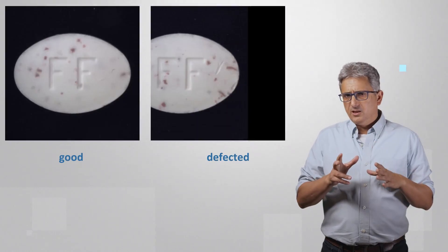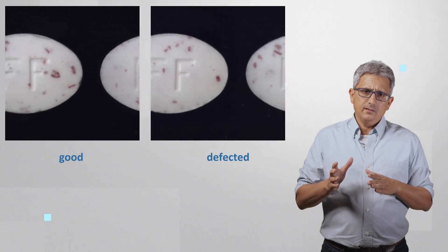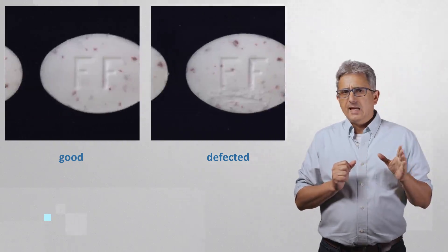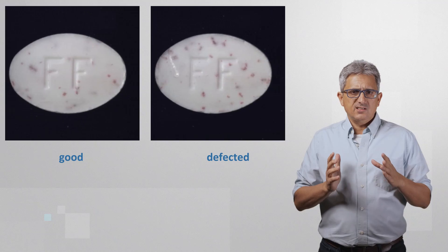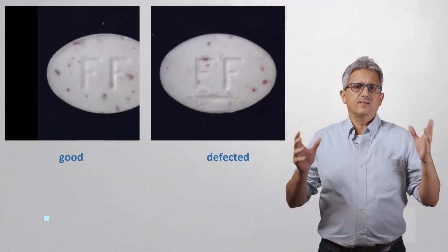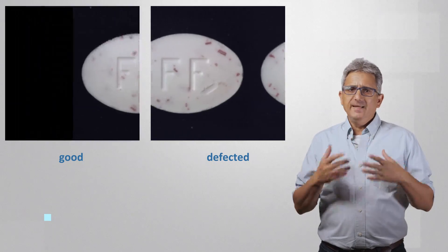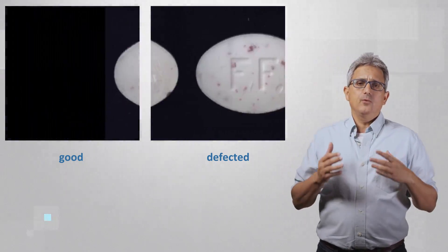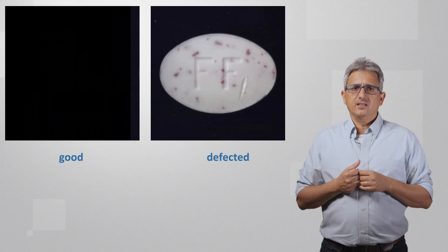The goal is to identify defected pills. You can see here examples of good pills and of defected ones. Having humans visually inspect each pill is expensive. Think about a 24-7 product line with millions of pills to sort, at a rate of 2 pills per second for example.